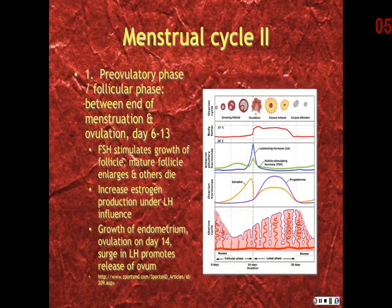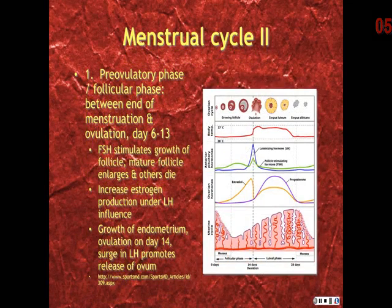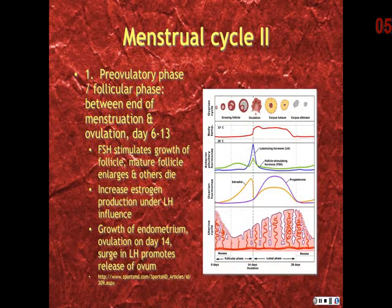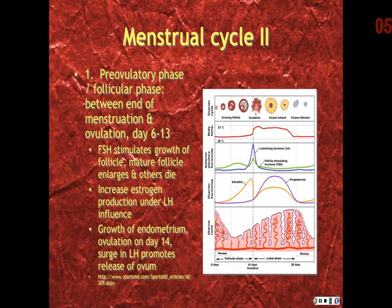The first day of bleeding, or shedding of the endometrium, is considered day one of the menstrual cycle. The pre-ovulatory, or follicular, phase occurs between the end of menstruation and ovulation, approximately day six to thirteen. FSH stimulates the growth of the follicle as it matures and enlarges; many of the others die. With the increase of estrogen production under the influence of LH, the endometrium grows.